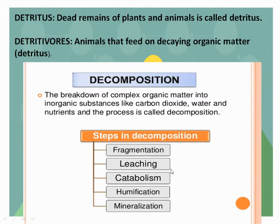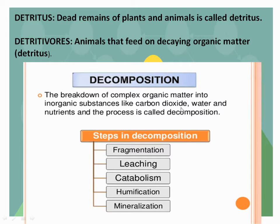Now we come to the second aspect affecting the functioning of an ecosystem, and that is decomposition. Decomposition is the breakdown of complex organic matter into inorganic substances like carbon dioxide, water, and nutrients. This process is called decomposition.